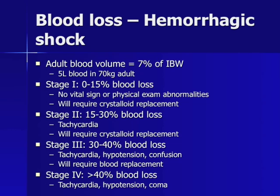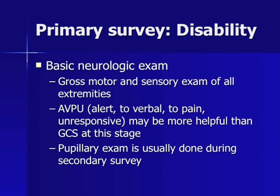After the circulation assessment comes Disability, which refers to a basic neurologic exam. A gross motor and sensory exam of all extremities is performed. An evaluation of the patient's level of alertness is also performed here, accomplished through the AVPU scale — alert, to verbal stimuli, to painful stimuli, or unresponsive — or the Glasgow Coma Scale, or GCS.